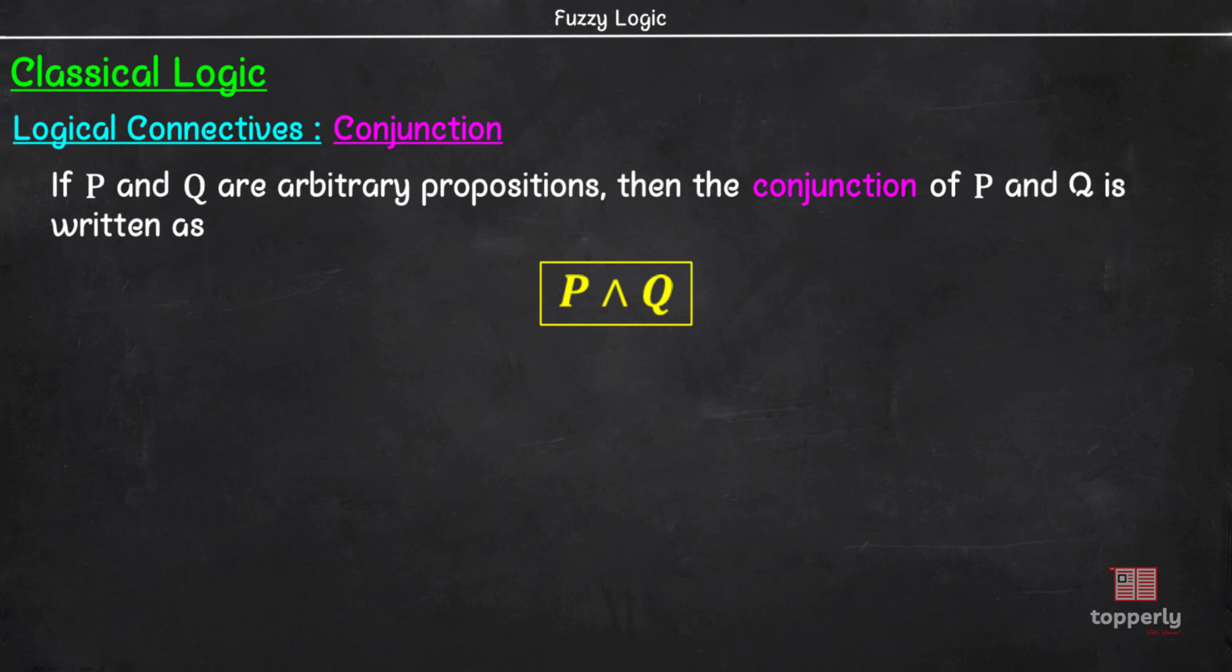Conjunction of two statements, P and Q, can be written as P conjunction Q. Here, this symbol represents the conjunction operator. P conjunction Q is true only if both P and Q are true and is false for all other possibilities. So, let us create a truth table for conjunction based on four possibilities for truth values of P and Q.